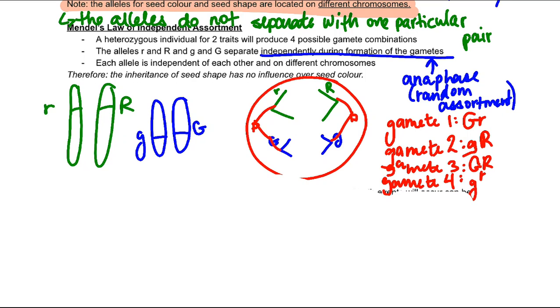So Mendel's Law of Independent Assortment states that a heterozygous individual for two traits will produce four possible gamete combinations. The alleles for lowercase r and uppercase R as well as lowercase g and uppercase G separate independently during formation of the gametes.